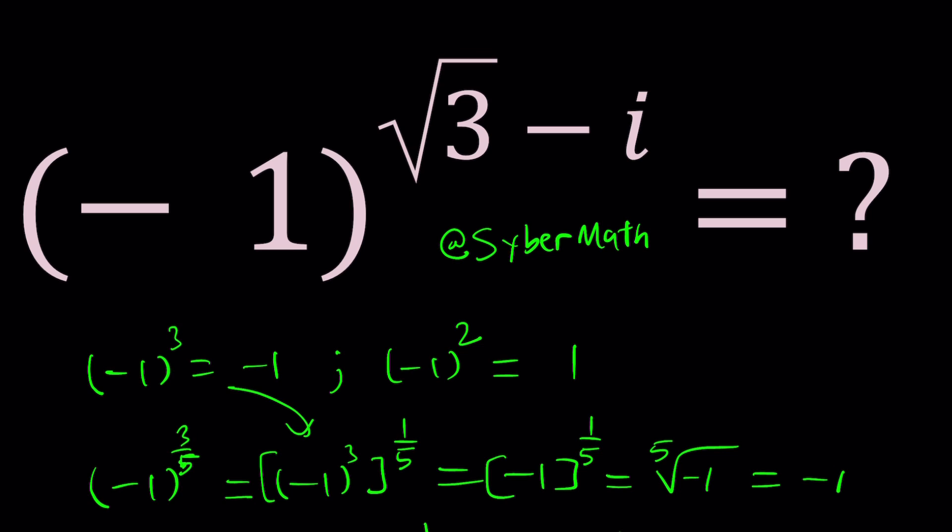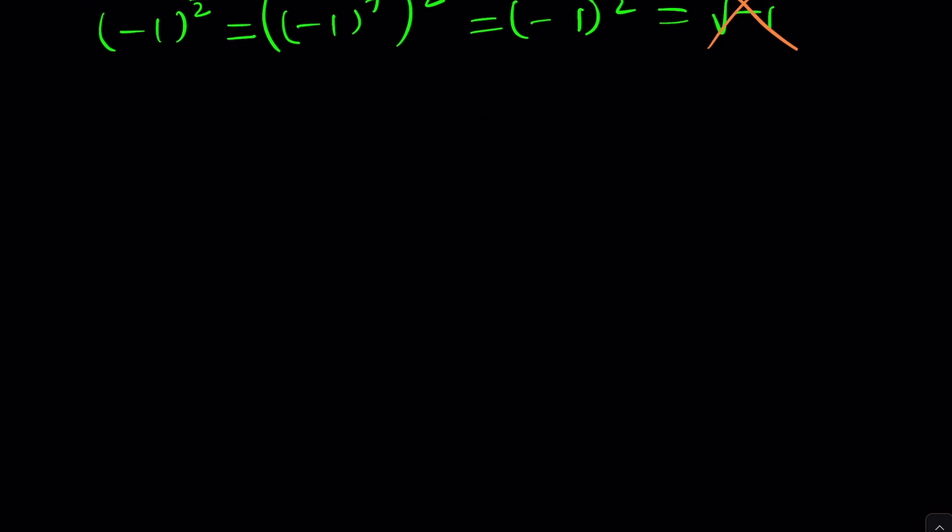But in the complex world things are different and this is very complex and kind of complicated because you have negative one and then you're raising it to a complex power. So what does it mean to raise a negative number to a complex power? I mean if you had one would that be one? Because all powers of one should be one, right? Or what if you had something like this? But this is even crazier because we have negative one. But don't worry I'm going to give you a general method that you can apply to any problem of this type and easily simplify something like this.